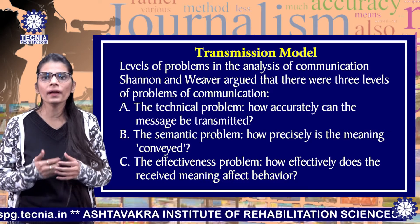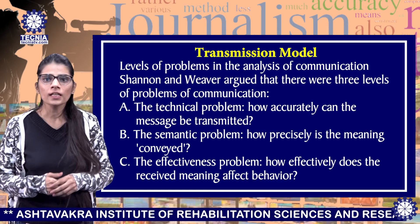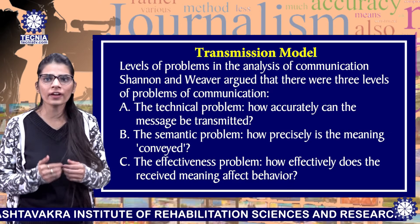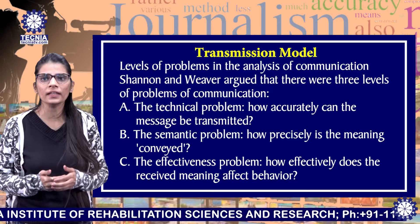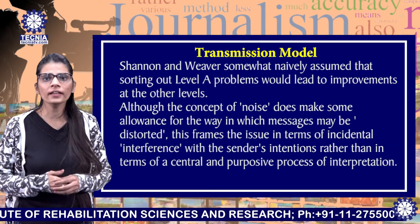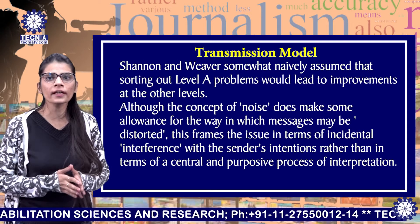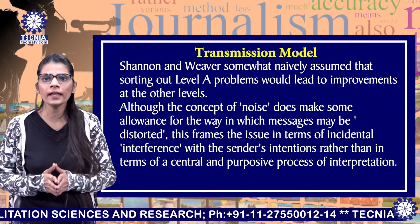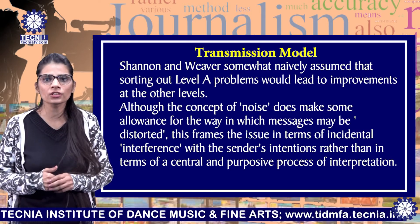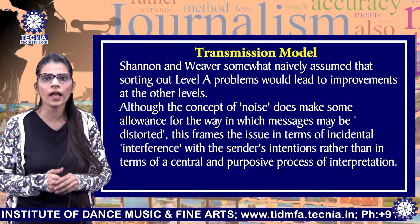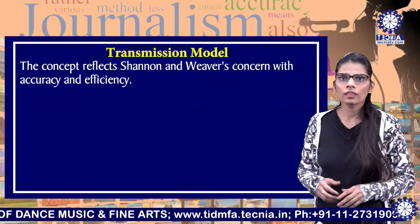Levels of Problems in the Analysis of Communication. Shannon and Weaver argued that there were three levels of problems of communication. A, the technical problem: how accurately can the message be transmitted? B, the semantic problem: how precisely is the meaning conveyed? C, the effectiveness problem: how effectively does the receiver's meaning affect behavior?